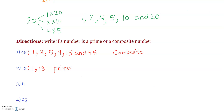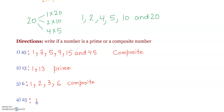The third example is 6. The factors of 6 are 1, 2, 3, and 6. It has more than two factors, therefore it is a composite number. The fourth example is 25. The factors of 25 are 1, 5, and 25. It has more than two factors, therefore it is a composite number.